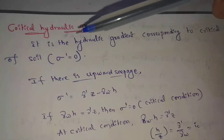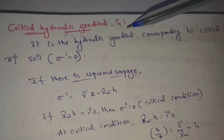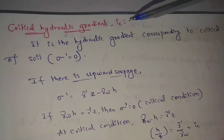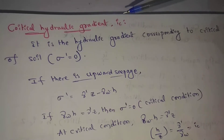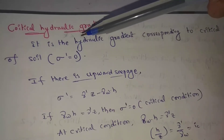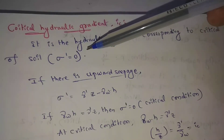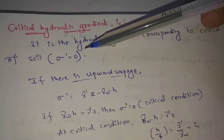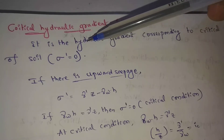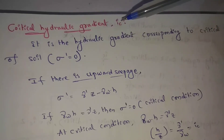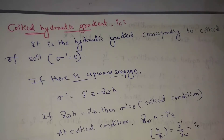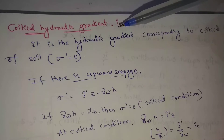Next one: critical hydraulic gradient, Ic. Ic means critical hydraulic gradient. I means hydraulic gradient. It is the hydraulic gradient corresponding to the critical condition of soil where sigma dash (effective stress) equals zero. This is the critical hydraulic gradient — the condition where effective stress in the soil reaches zero.